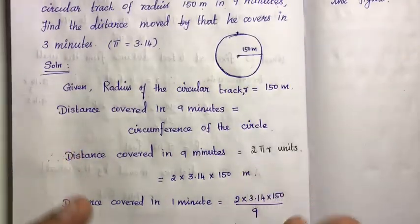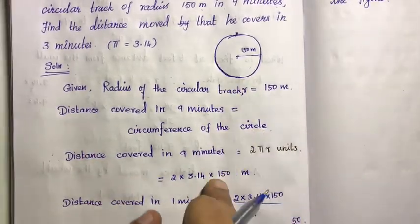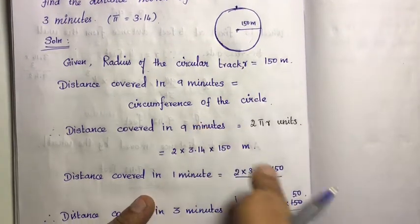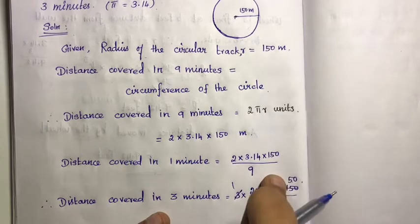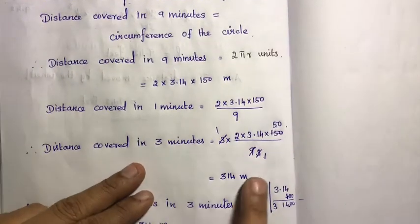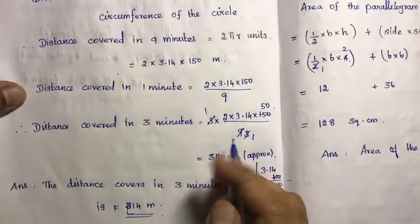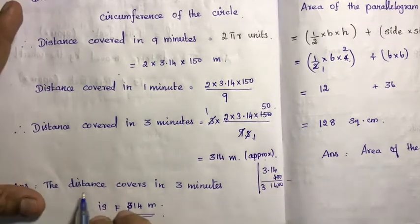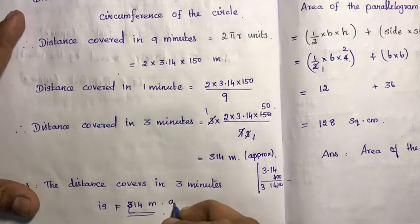In this problem, distance covered in 9 minutes equals the circumference of the circle. After substituting the formula, divide by 9 to get the distance per minute, then multiply by 3 to get distance in 3 minutes. Since pi is substituted approximately as 3.14, the answer is approximately 314 meters.